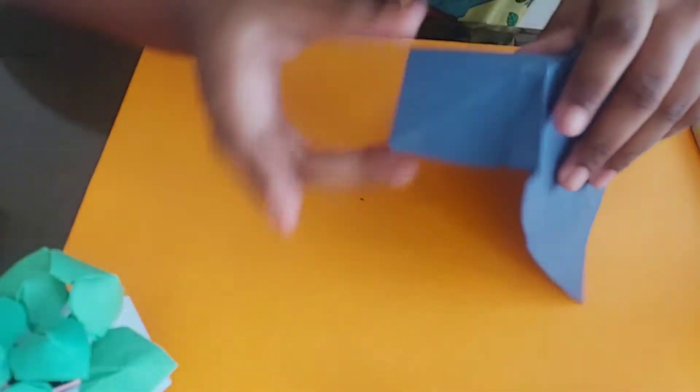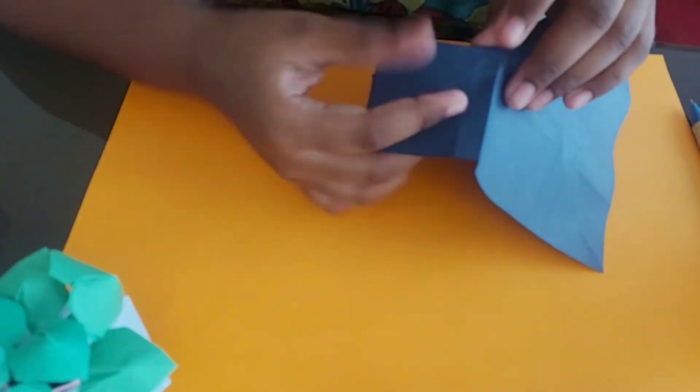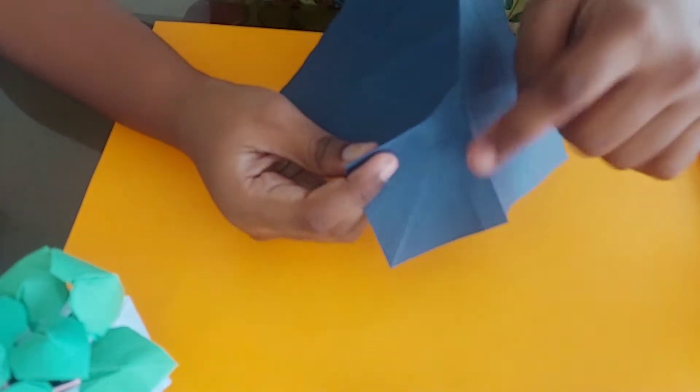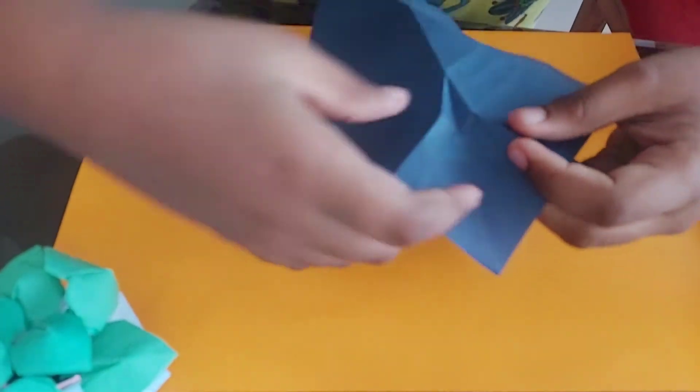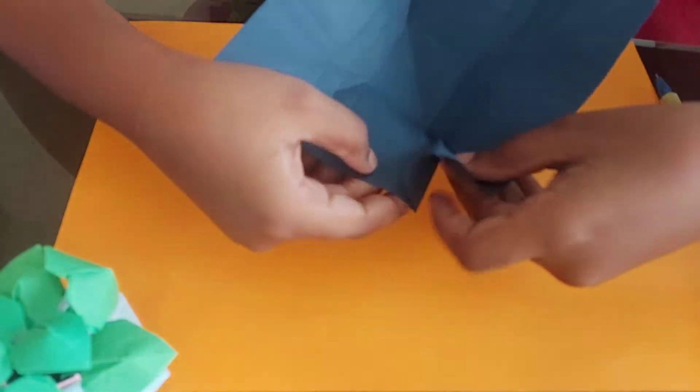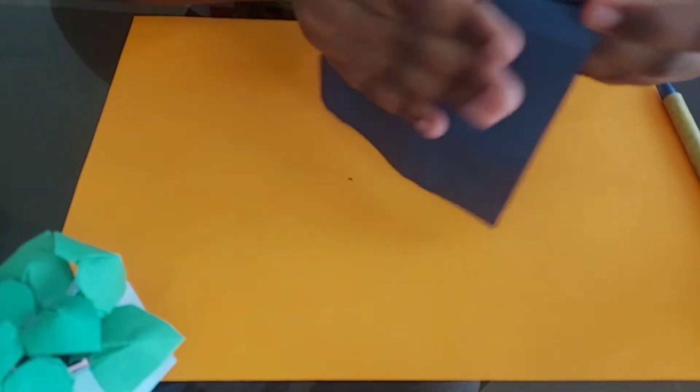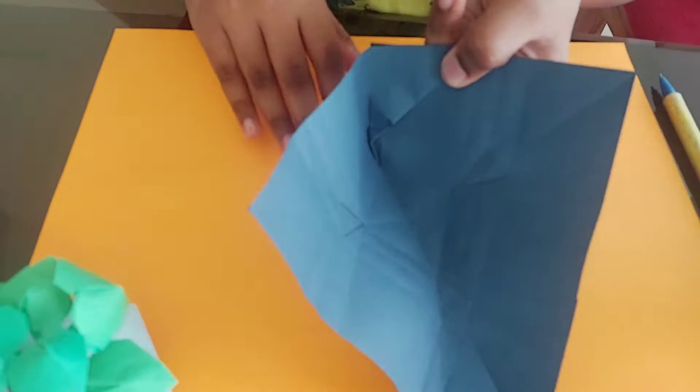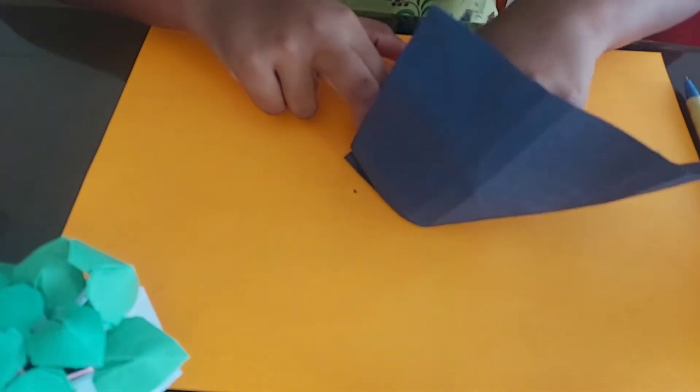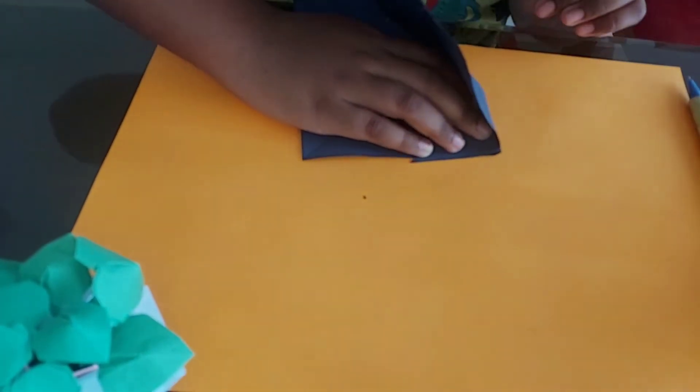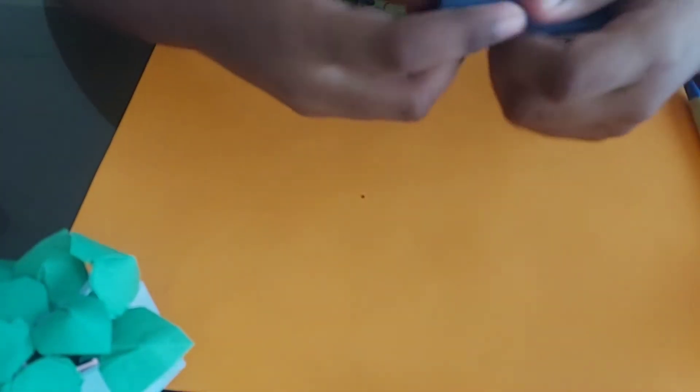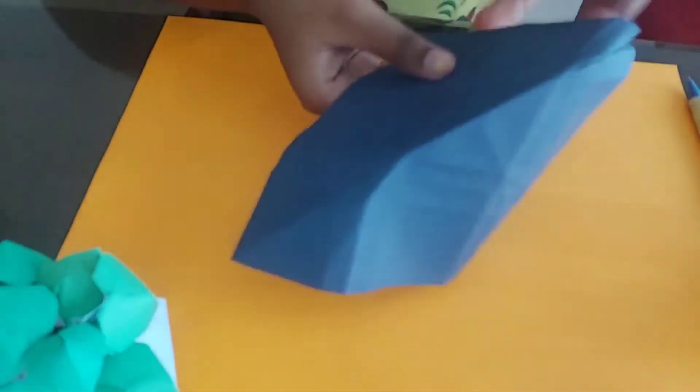Now we need to grip the triangle and the square which is near it and make a fold like this. And then we need to do all the sides also.